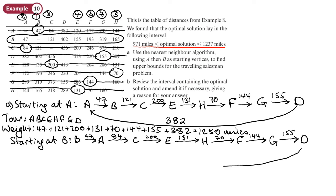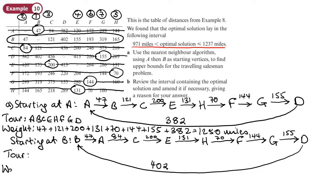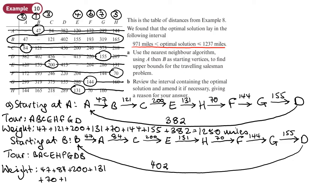Then from D we need to return back to B — D to B is 402. The tour is B, A, C, E, H, F, G, D, B. The weight is 47 + 84 + 200 + 131 + 70 + 144 + 155 + 402, which gives a total weight of 1,233 miles.